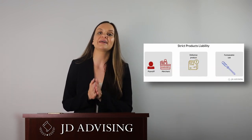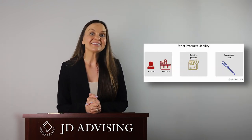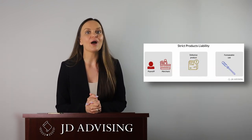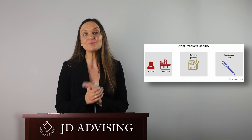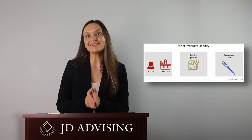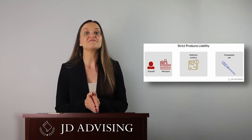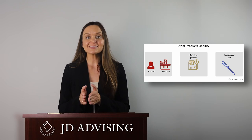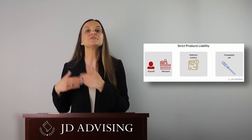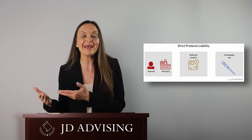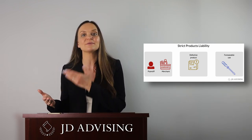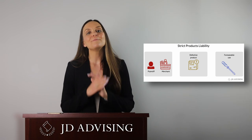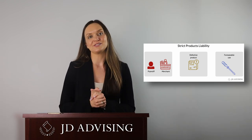The last highly tested topic is strict liability, specifically strict products liability. For a strict products liability claim, the plaintiff must show that the defendant is a merchant, the product had a defect, and the plaintiff used the product in a foreseeable way at the time of injury. Try your best to memorize those elements.